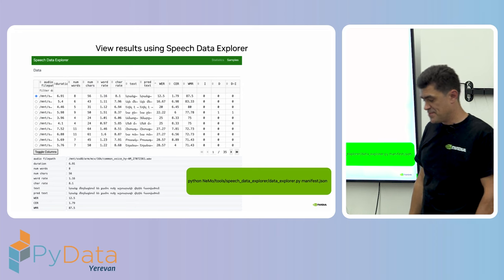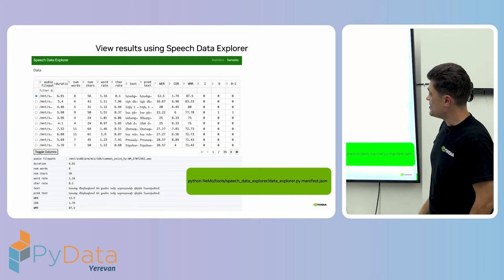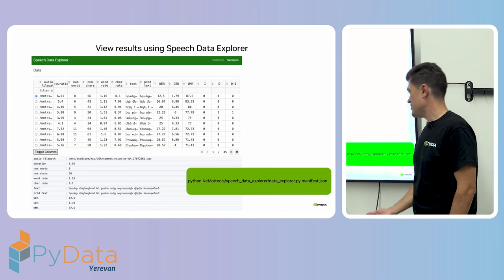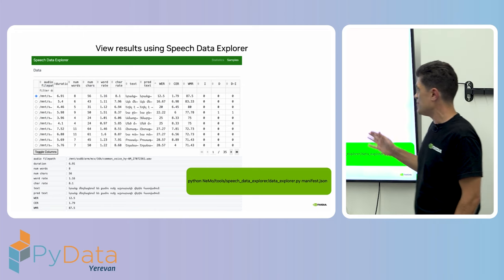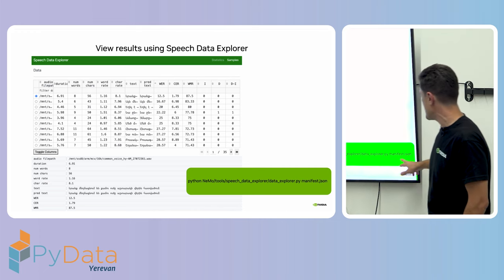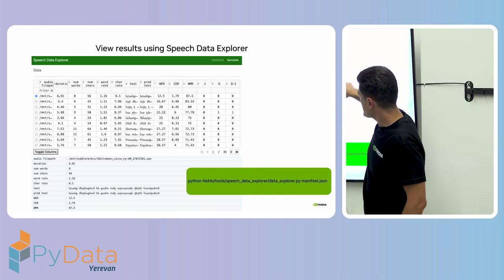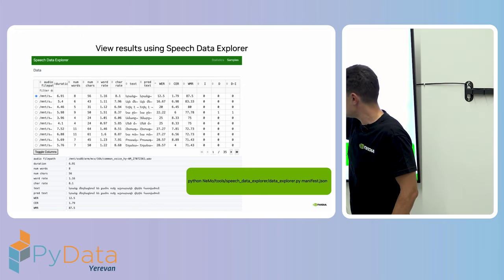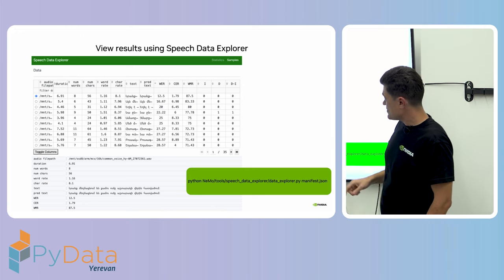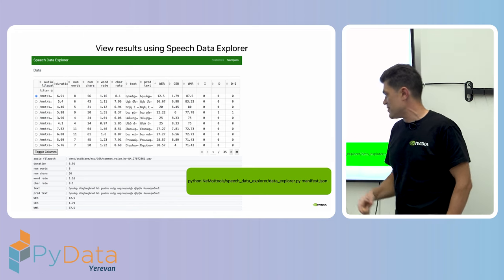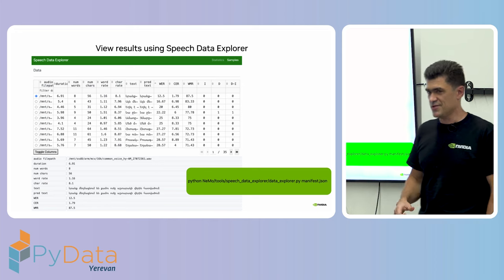Once we've processed the data, we might want to visualize and understand the results. We have a tool called the Speech Data Explorer — a web interface. You can run it by specifying the manifest, and using a table with a filter line you can sort by value, filter out entries, and choose which files to inspect. You can check which words are correctly recognized and whether they are correctly labeled — sometimes it's correctly recognized but incorrectly labeled, or vice versa.